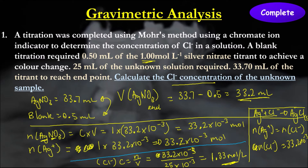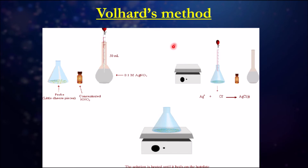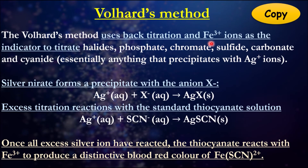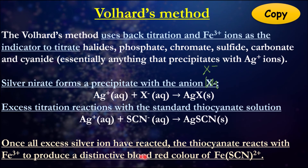The next type is the Volhard's method. With this method we use back titration and Fe³⁺ ions to indicate the titration. It can be used to determine halides, phosphates, chromates, sulfides, carbonates, and cyanide. Silver ions complete this process: silver nitrate first reacts with the halide to form a metal halide precipitate, then the excess silver reacts with a standard thiocyanate solution, and we get a distinct blood-red color change from the formation of iron(III) thiocyanate.